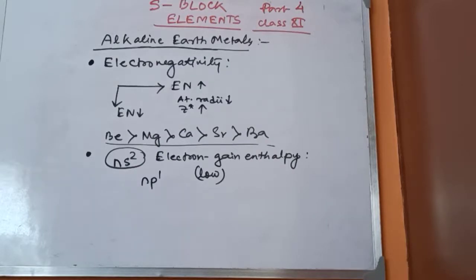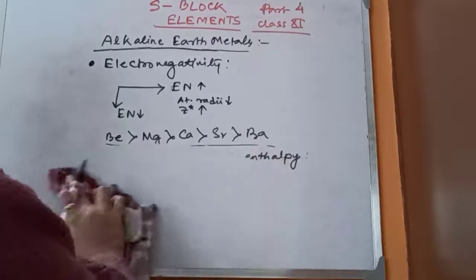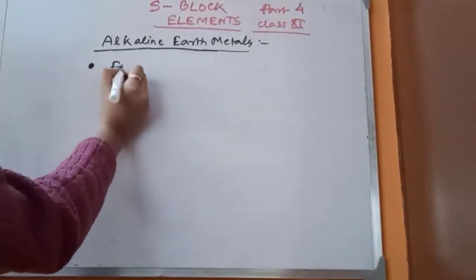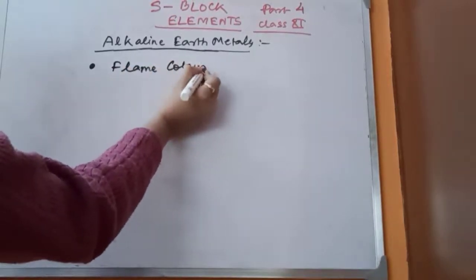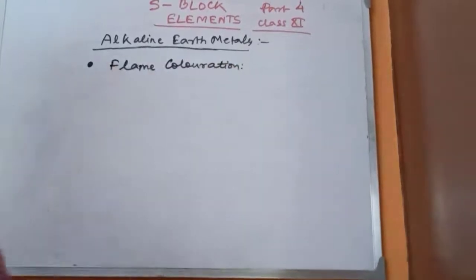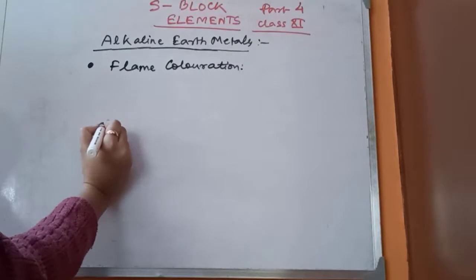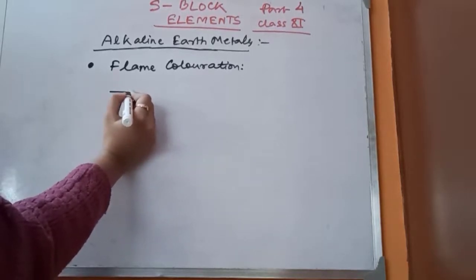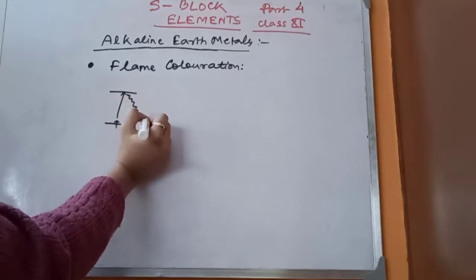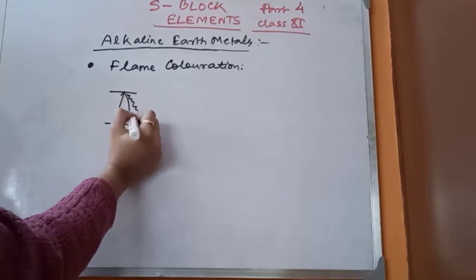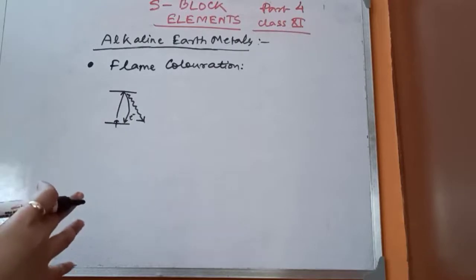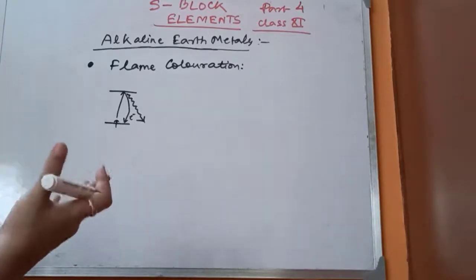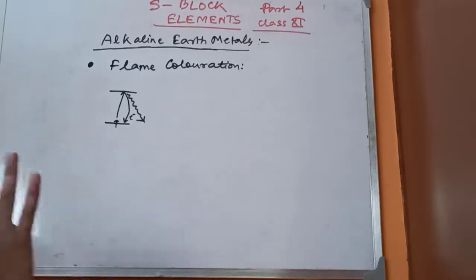Now I will come to flame coloration. Just as alkali metals show color in flames, alkaline earth metals also show color in the flame test, with certain exceptions. In the flame test, atoms absorb energy from the flame, electrons are excited to a higher energy state, and when they emit radiation to return to the lower state, that radiation falls in the visible region giving different colors depending on the frequency.